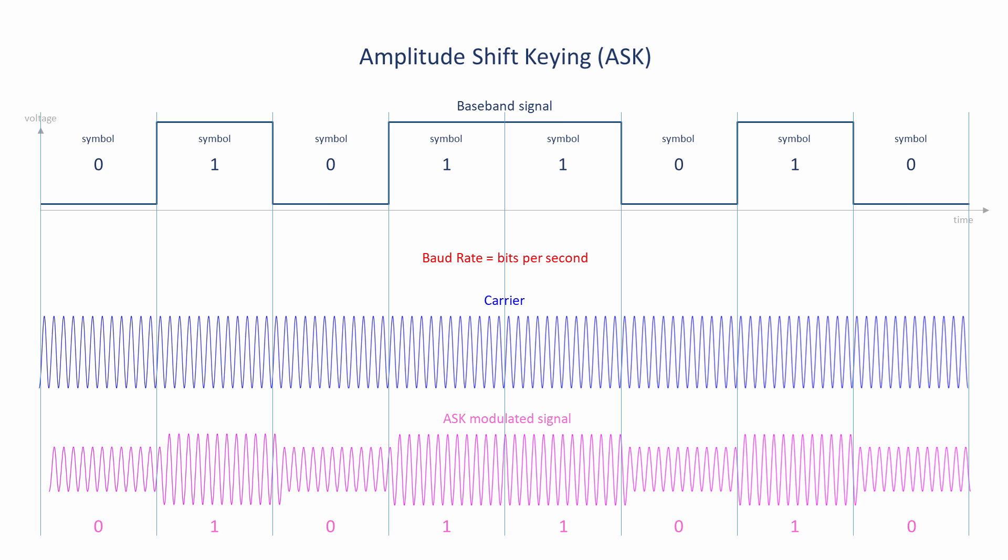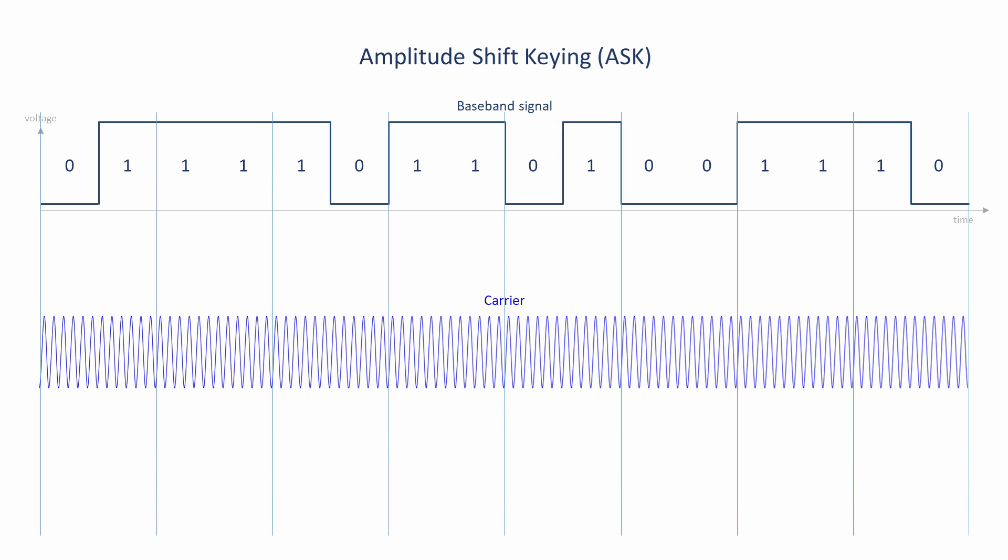The principle of amplitude shift keying can be taken a stage further. Rather than only two possible waveforms in the modulated signal, there could be four, each with a different amplitude.